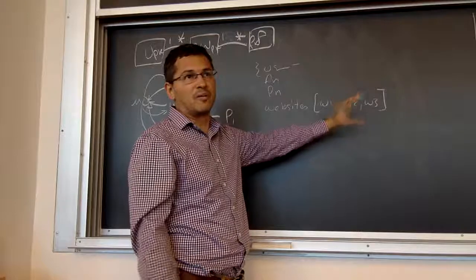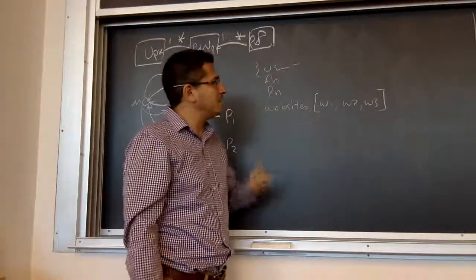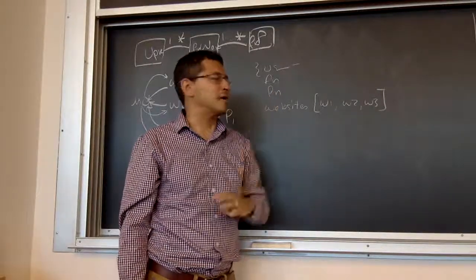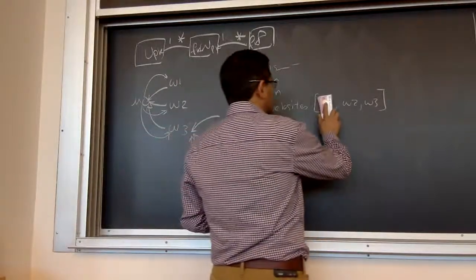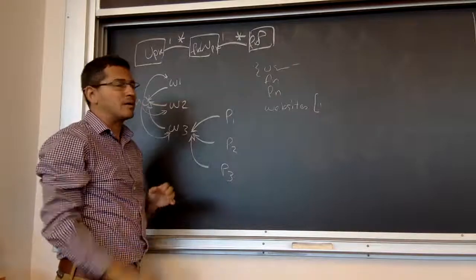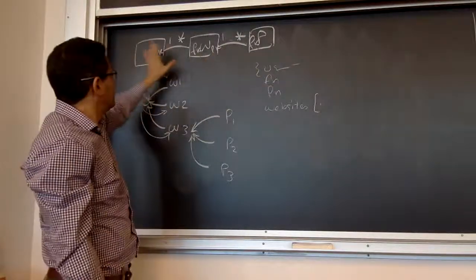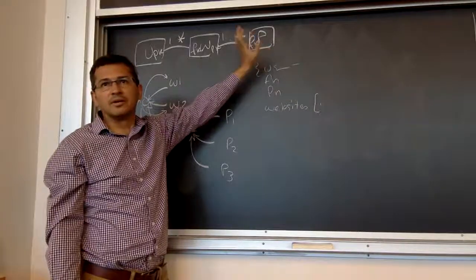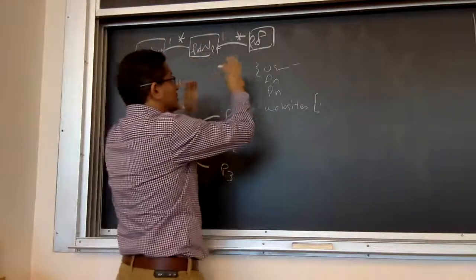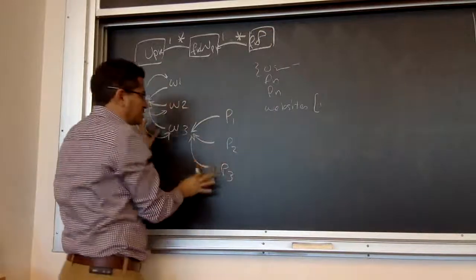That is actually more natural from an object-oriented point of view. So that's two ways you can encode this relationship. There's a third way. The more common way to implement this is to normalize the data — a normalized data structure where each entity has its own table or collection. There would be a collection of users, a collection of websites, a collection of pages, and so on. The only way we know they're related is through references.